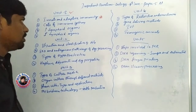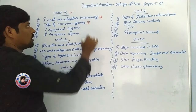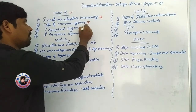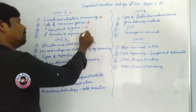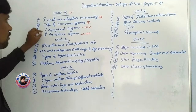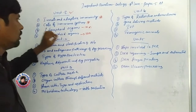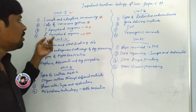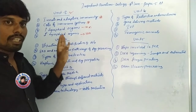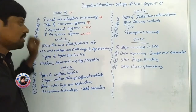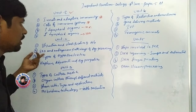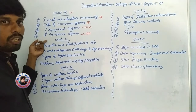Let us know the sense of immune system — 10 marks, important question. Primary lymphoid organs — 10 marks. Secondary lymphoid organs — 10 marks. Sometimes primary lymphoid organs — 5 marks, secondary lymphoid organs — 5 marks. These are the important Unit 1 questions.